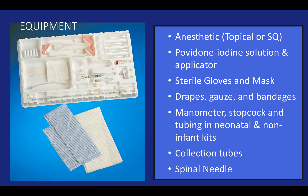Let's go over the equipment. On the left you can see our typical neonatal LP tray. Make sure you use some type of anesthetic — if not subcutaneous intramuscular lidocaine, then a topical such as EMLA cream. Use povidone-iodine, also called betadine, with the applicators in the kit. Always don sterile gloves and a mask, use sterile drapes, and have gauze and bandages on hand. A manometer is always important. For neonatal procedures we don't always need opening and closing pressure, but for other children it remains vital. Make sure you have enough collection tubes — each kit typically comes with four, and if you need more, use sterile, empty tubes with no preservatives.